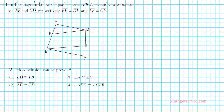Question 11 says: in the diagram below of quadrilateral ABCD, E and F are points on AB and CD respectively. Segment BE is congruent to segment DF, and segment AE is congruent to segment CF. Which conclusion can be proven? This is a problem where we can practice our proof writing skills. Before drawing a conclusion, I'm going to annotate my diagram using this given information.